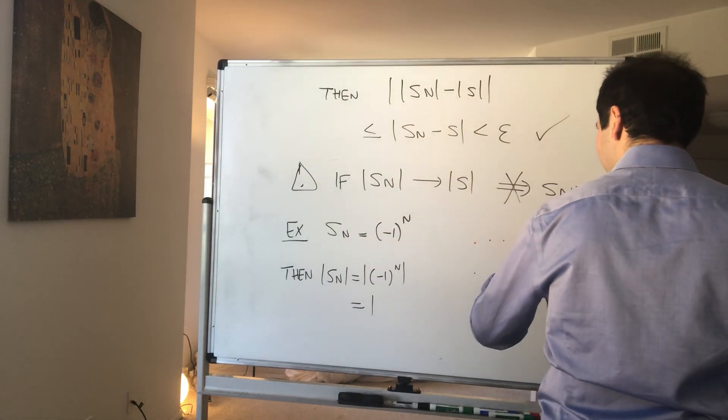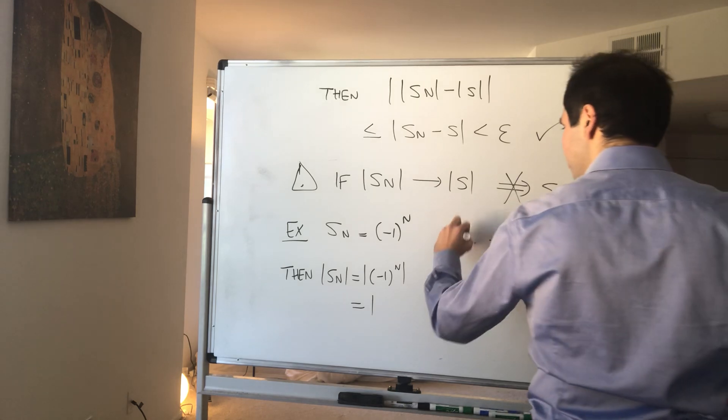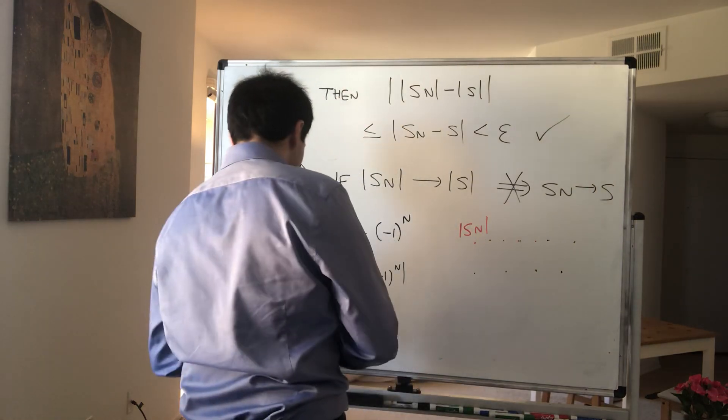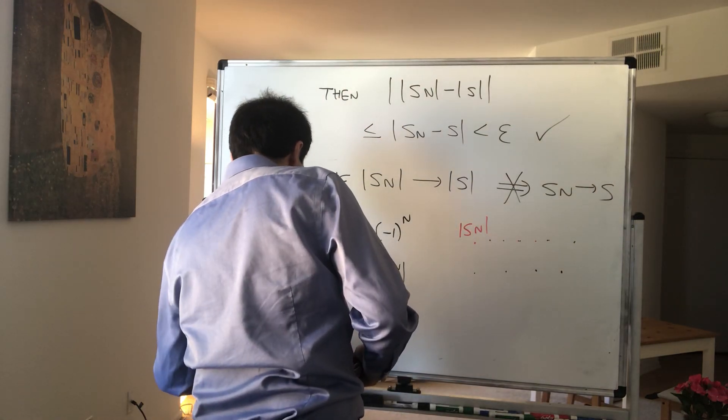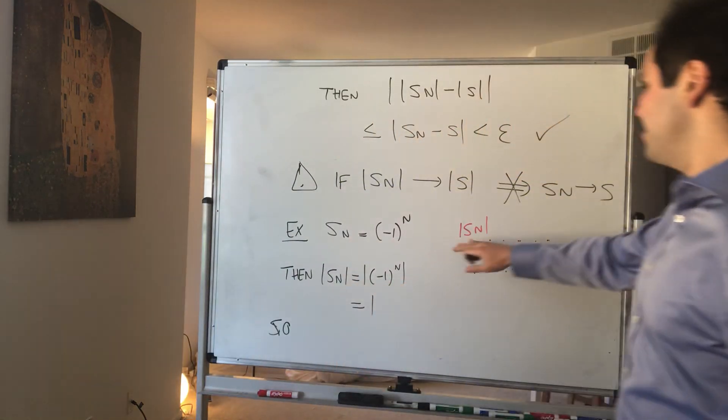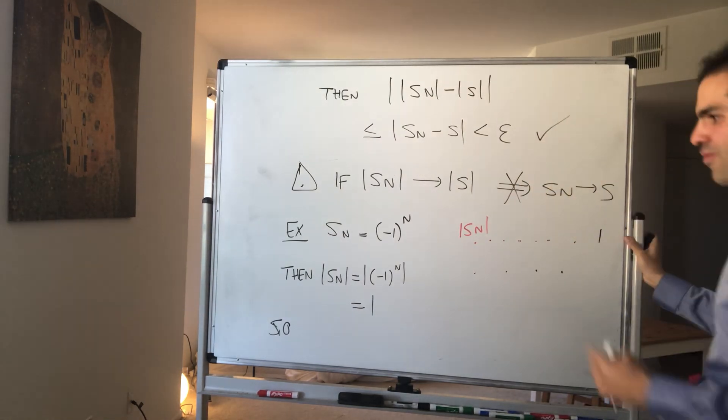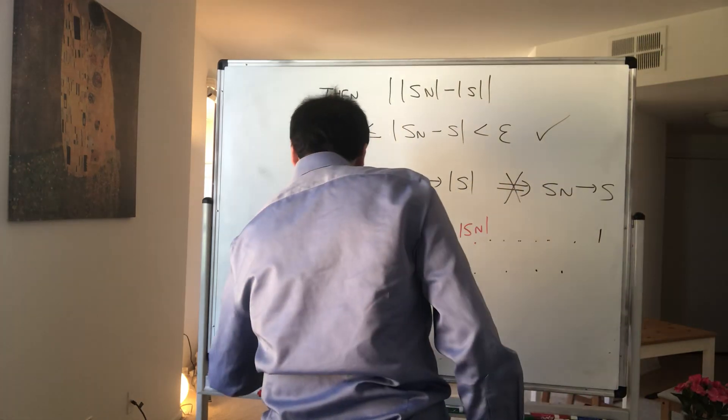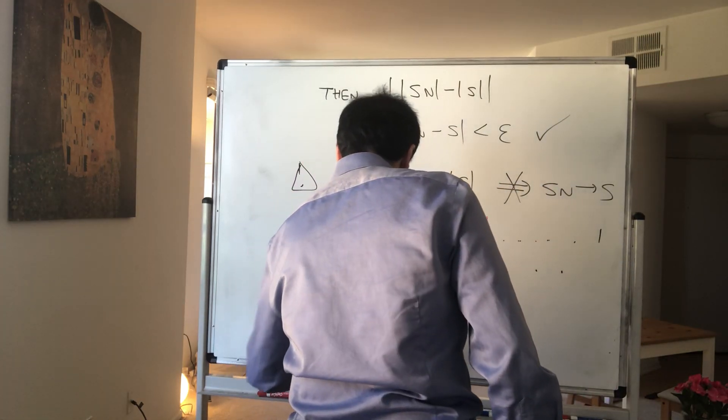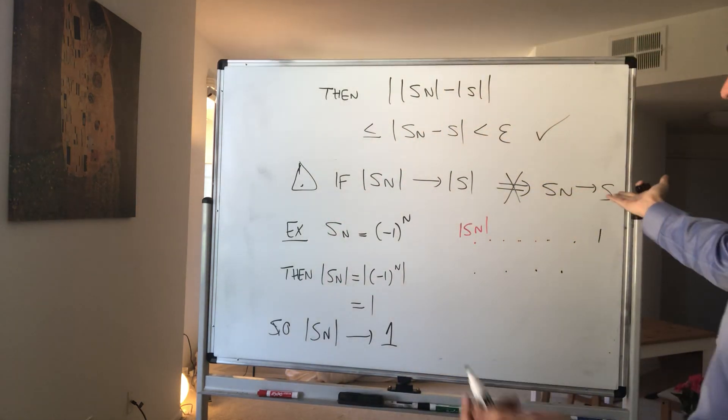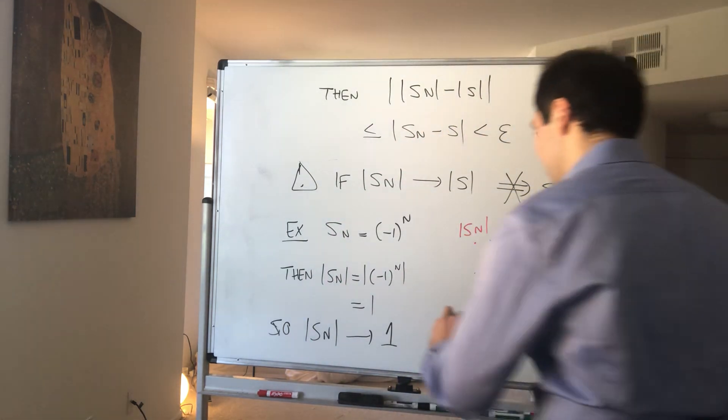So you see, if you take the sequence of absolute values, it converges to one. Because the sequence is constant equal to one, it also converges to one. So |s_n| converges to one, but the sequence itself doesn't converge to anything.